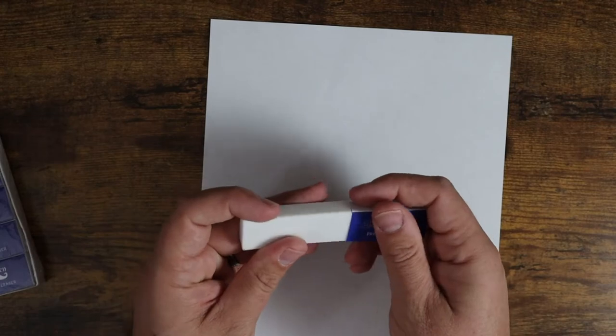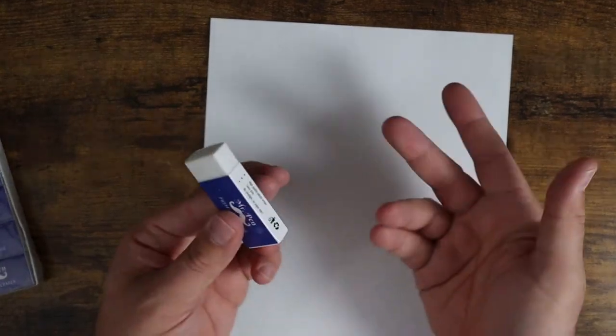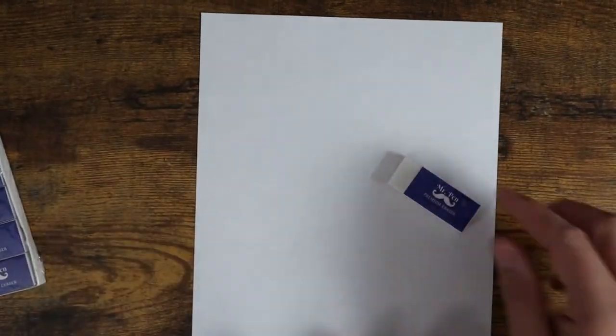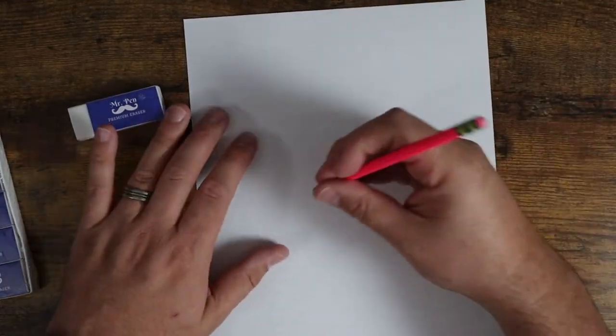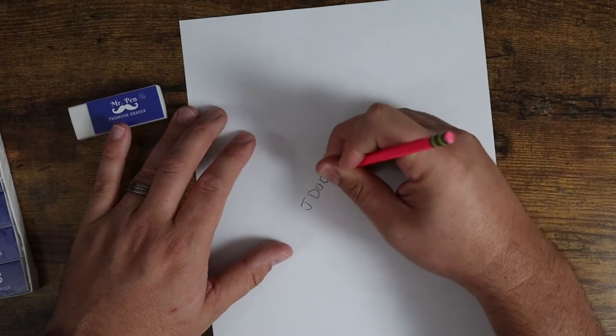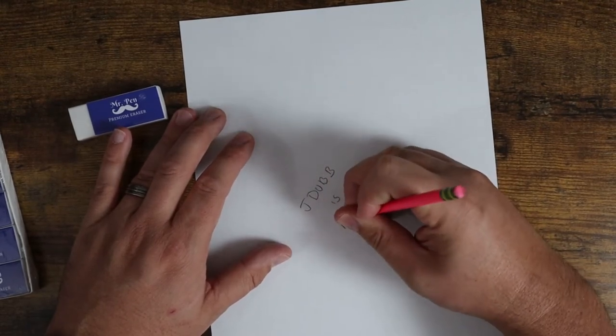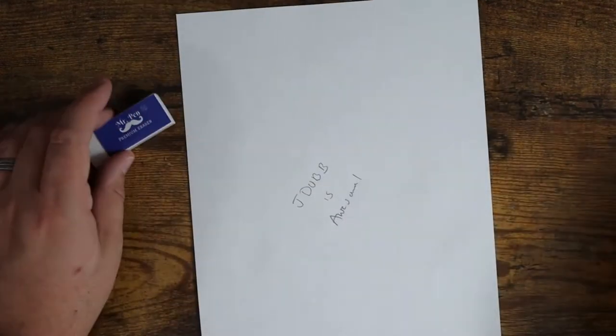So let me just show you how these work. You can keep them in the sleeve or not. I like to keep them in the sleeve. It just helps you hang on to them, and then you can take them out when you need to. But here's a pencil. Let's use one of my daughter's pencils real quick and we'll just write J-Dub is awesome. My terrible handwriting.